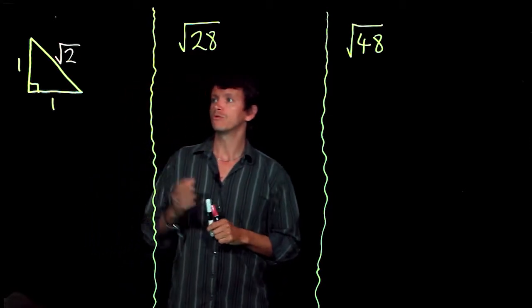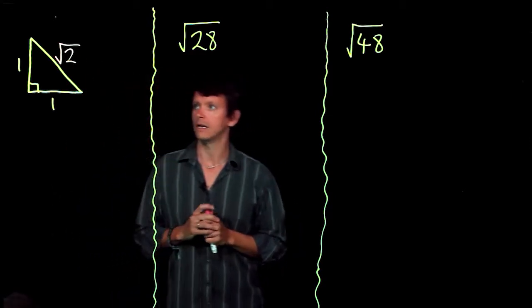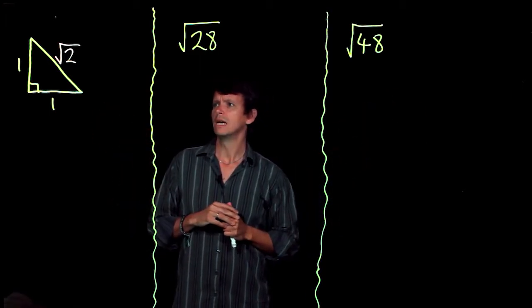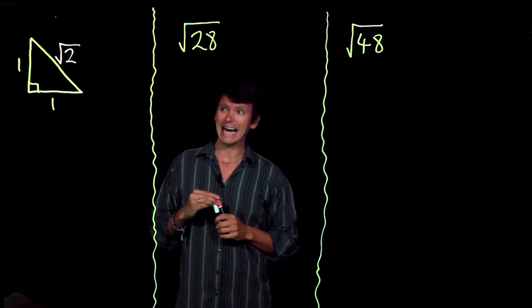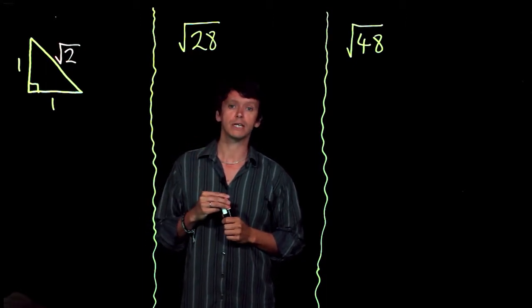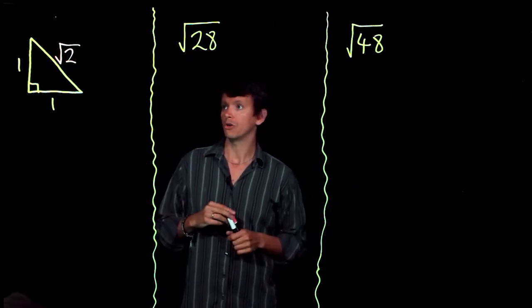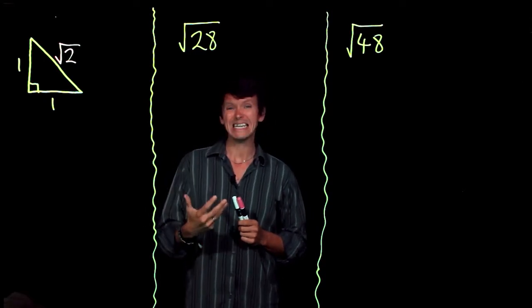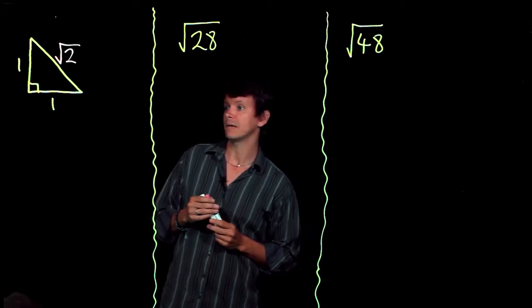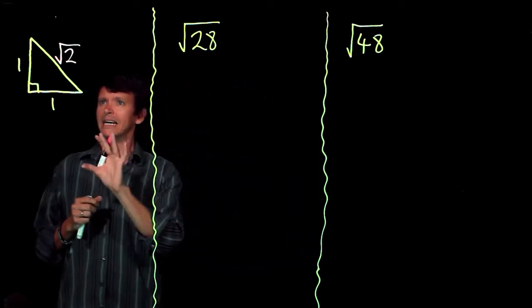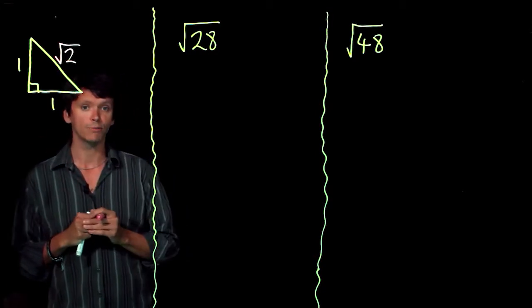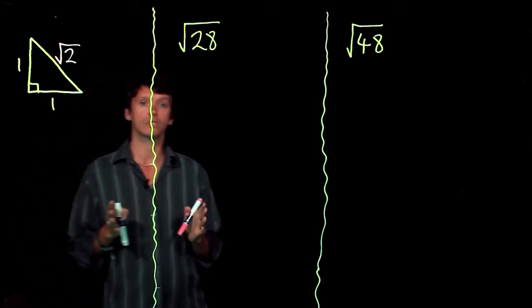Now if you put root 2 into your calculator, you're going to get a decimal number of 1.4 something something, and it will go on and fill your screen. That's actually an approximation because that number would continue on and on infinitely and it would not stop and it would not repeat. It's known as an irrational number, and because it wouldn't stop, as soon as you write it as a decimal number you've actually approximated it.